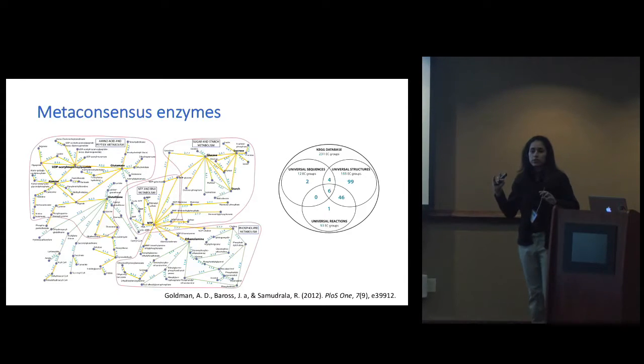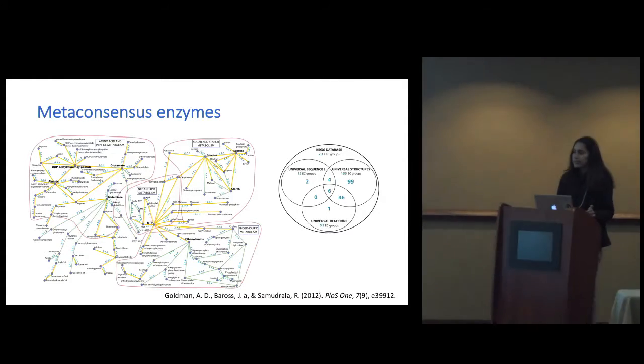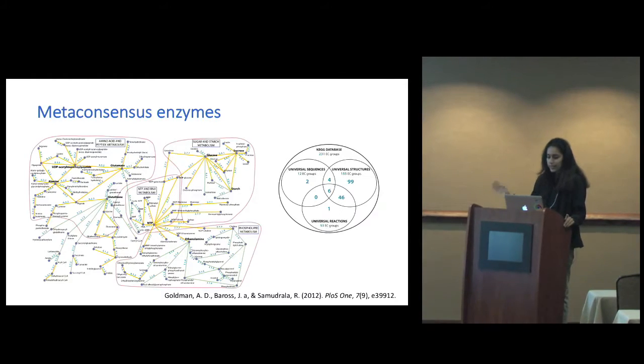For those not familiar with EC classification, there are four levels of classification, and these are up to the three levels. To summarize work by Goldman and colleagues, they postulated that these 10 EC groups were part of an ancestral metabolic network that they've created here and formed the bulk of functions for the ancestral form of life.